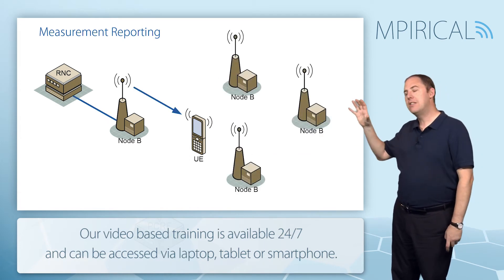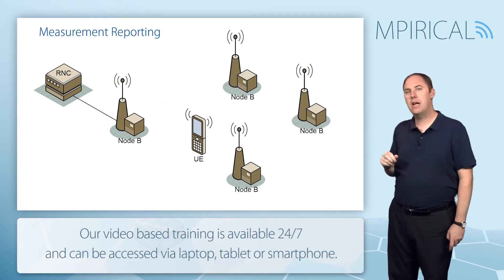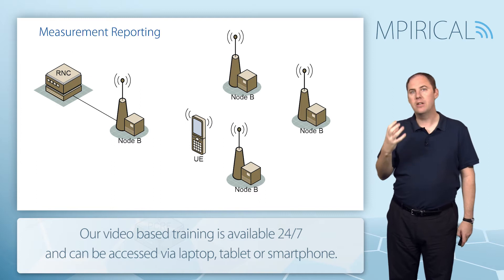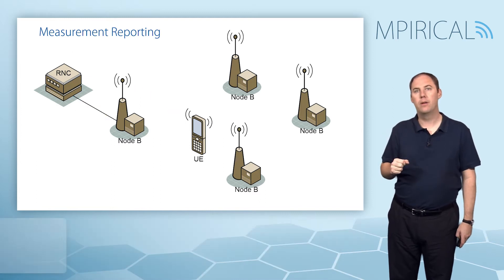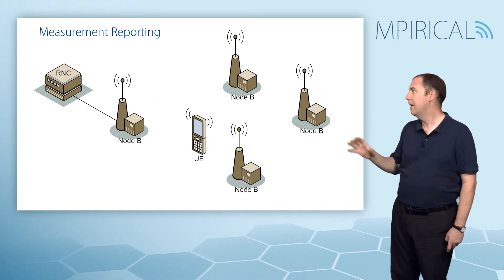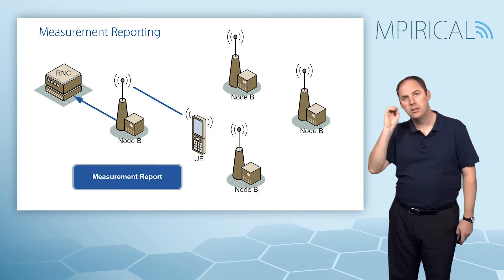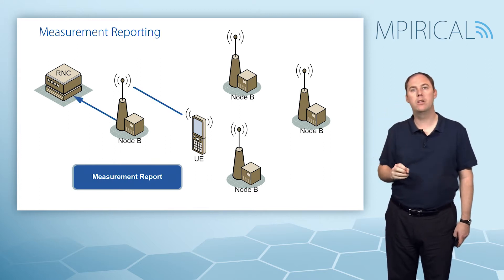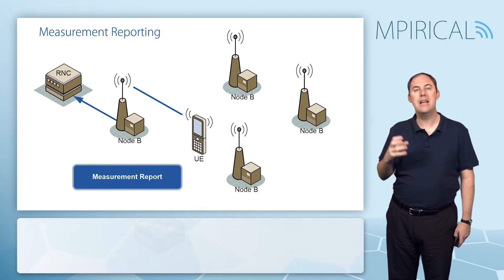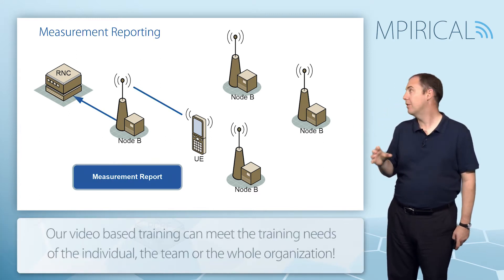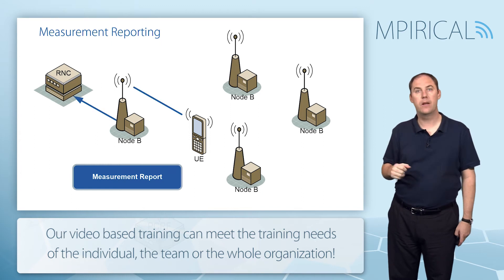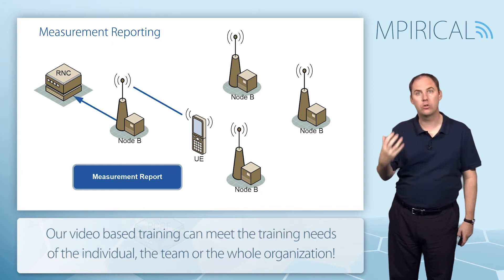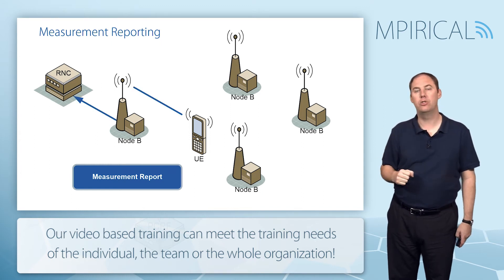The mobile is now measuring neighbouring cells based on this measurement control information. When a certain trigger is met, a measurement report is sent back up to the RNC indicating, for example, to add one of these cells. That will trigger the actual soft handover procedure.